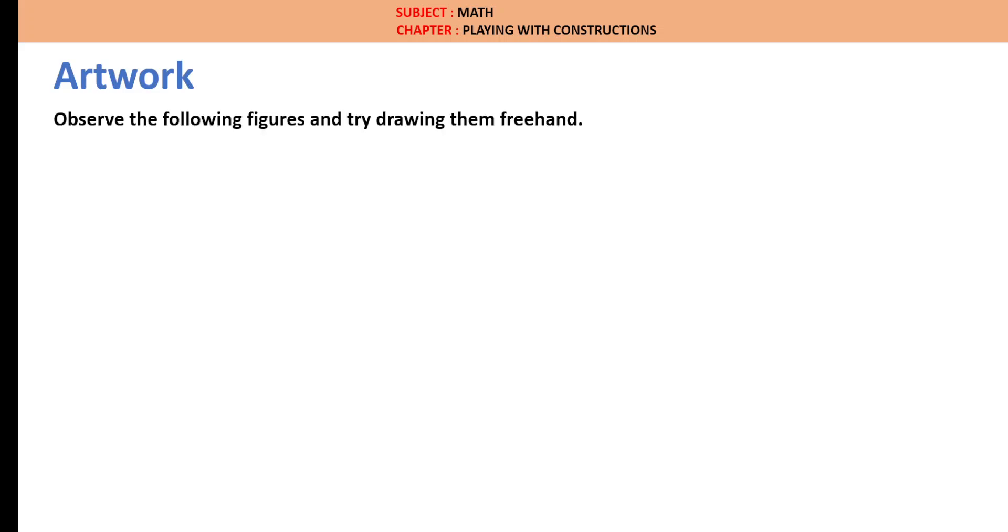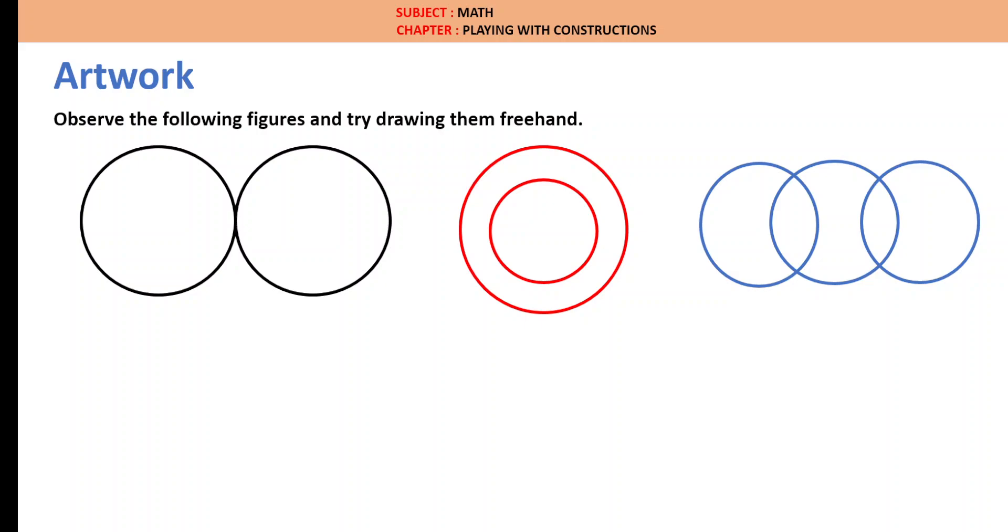Artwork. Observe the following figures and try drawing them freehand: two circles, concentric circles, circles meeting at two points, one small circle and one big circle, two small circles as a head with one straight line, and two straight lines with a small circle at one edge so that it looks like scissors.